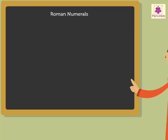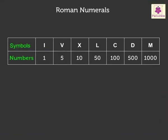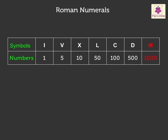Here are the letters used to write the numbers. The symbol I is equal to 1. V is equal to 5. X is equal to 10. L is equal to 50. C is equal to 100. D is equal to 500. And M is equal to 1000.